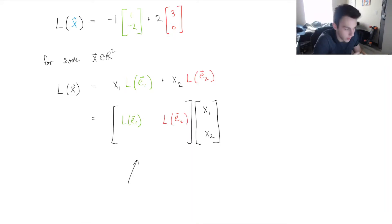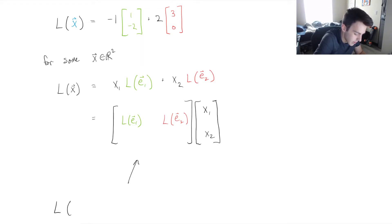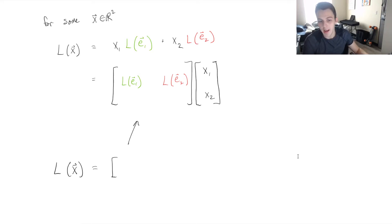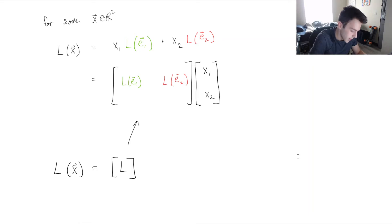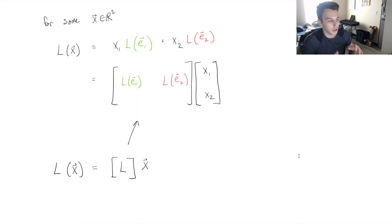So the biggest takeaway from linear transformations is that we can write the output of our linear transformation as some matrix — we call it the standard matrix, because it's built from where our standard basis vectors land — multiplied by the input vector X. When we multiply X by that standard matrix, we're actually transforming all of space. I'll end this video here and in the next videos get into more computational things with linear transformations, but this should provide a solid foundation to build off of.